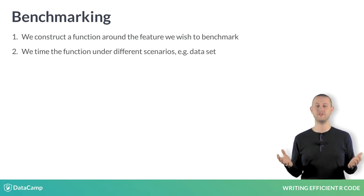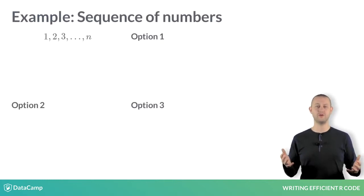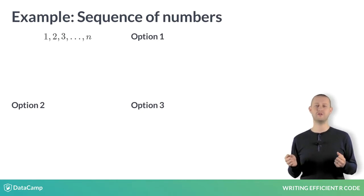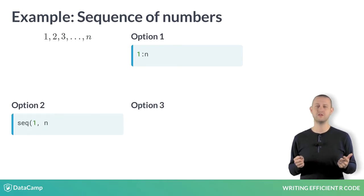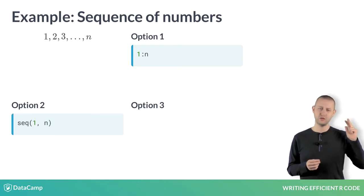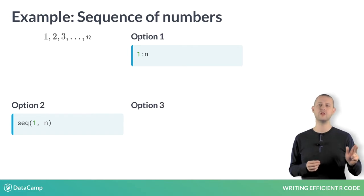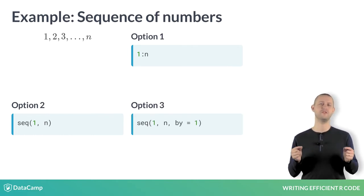Let's have an example. Suppose you want to generate a sequence of integers. There are three obvious ways to do this: the first, use a colon; the second, the sequence function with the default increment step size; and the third, the sequence function where we explicitly specify the step size.